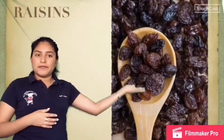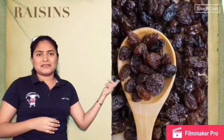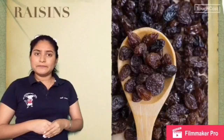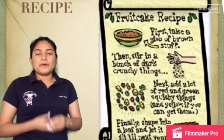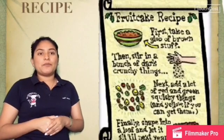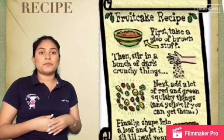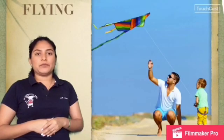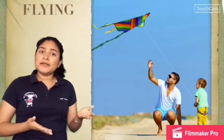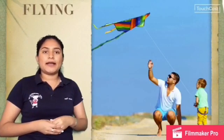Raisins — these are raisins. I don't like the raisins in my food. Recipe — the recipe is a process that you have to follow to make a food or a dish. Flying — flying is a verb. For example, I'm flying a kite.